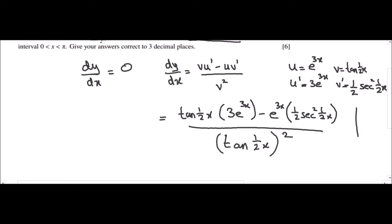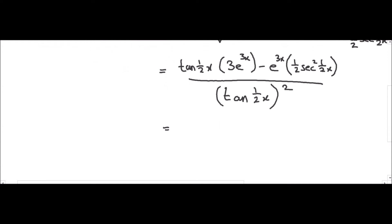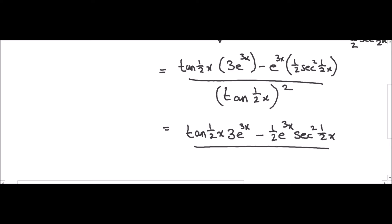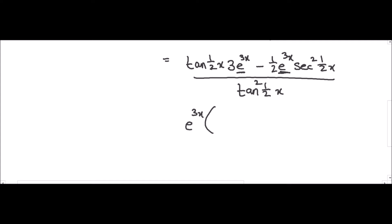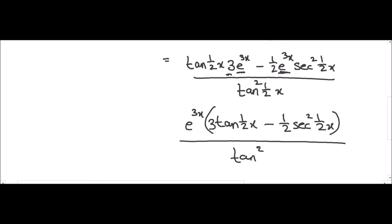Now we can further simplify by expanding the brackets. We have 3e^(3x)·tan(½x) minus ½·e^(3x)·sec²(½x), all over tan²(½x). Since e^(3x) is common, we factor it out to get: e^(3x) times [3·tan(½x) minus ½·sec²(½x)] over tan²(½x). This is our derivative dy/dx.